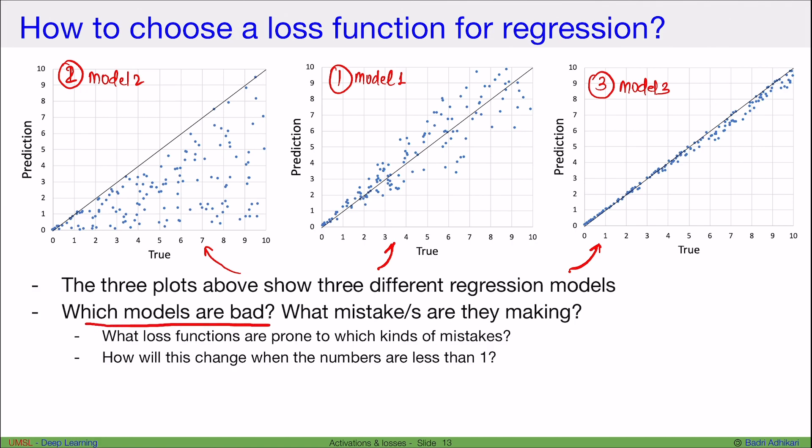The question is, which models are bad out of these? And what mistakes are they making? The things to look at is, what loss functions are prone to which kinds of mistakes? And how will this change when the numbers are less than 1?